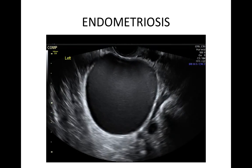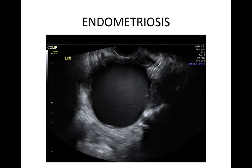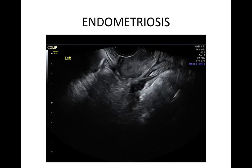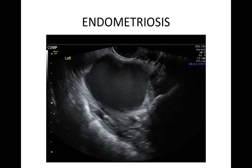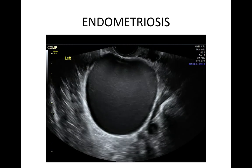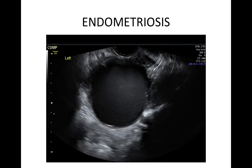An endometrioma is typically a unilocular cyst with no solid material. The cyst contents have ground glass echogenicity, some minor shadowing and minor vascularity in the cyst wall.